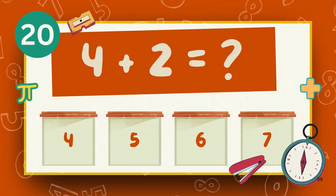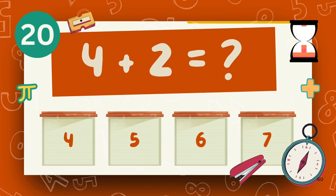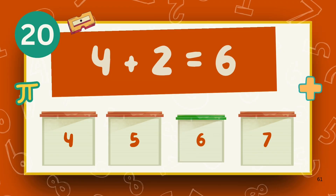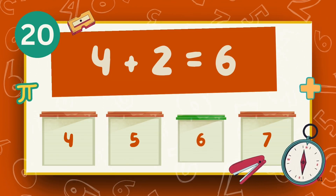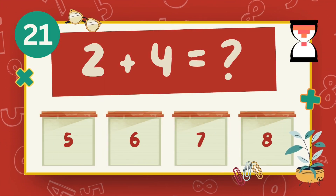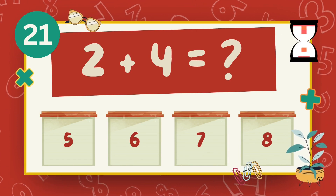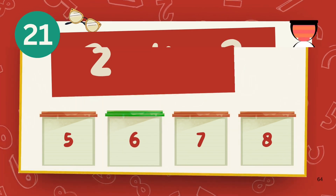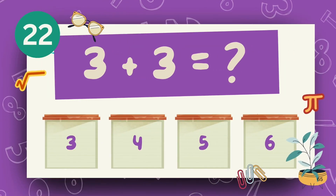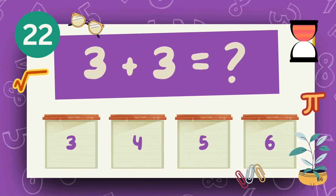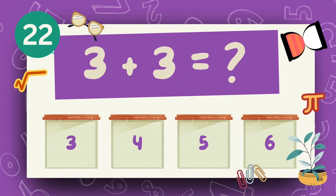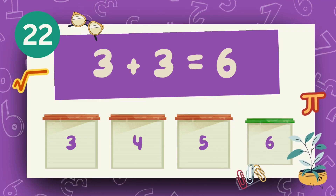What is 4 plus 2? The answer is 6. What is 2 plus 4? The answer is 6. What is 3 plus 3? The answer is 6.